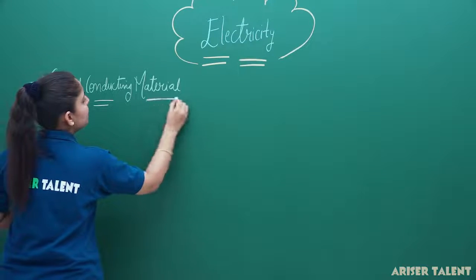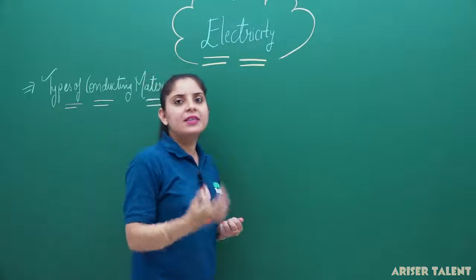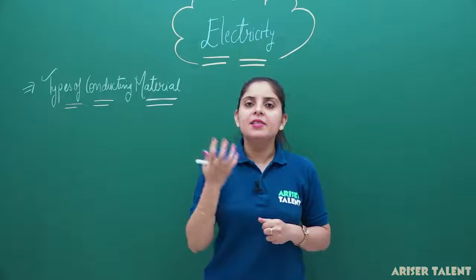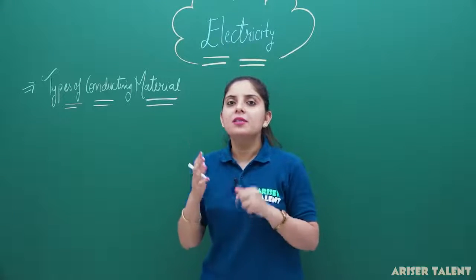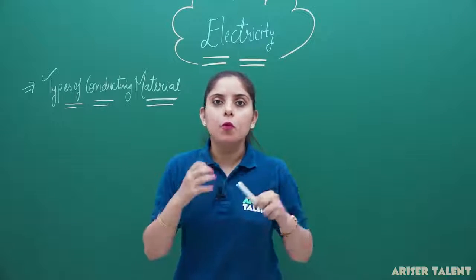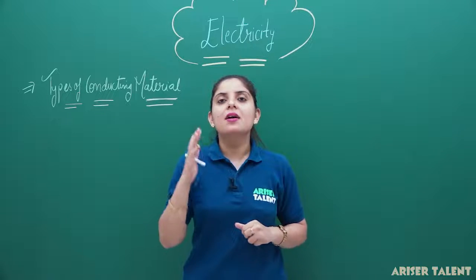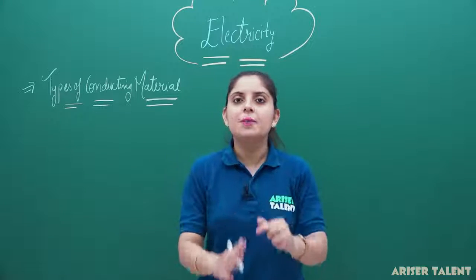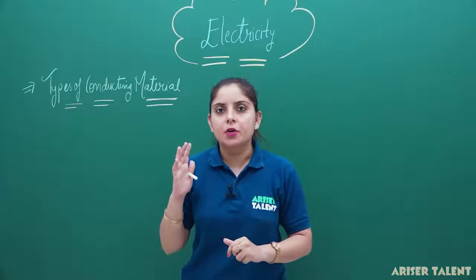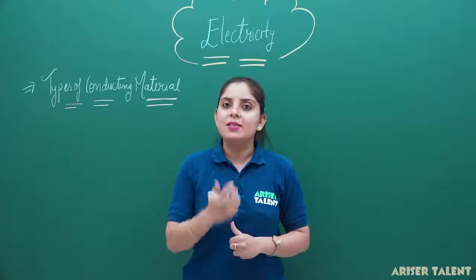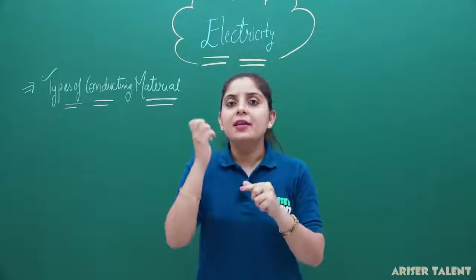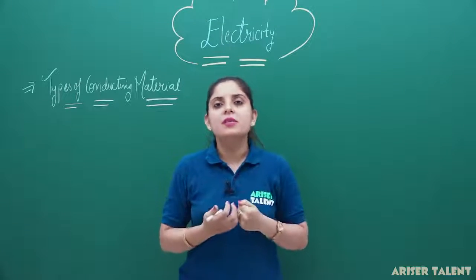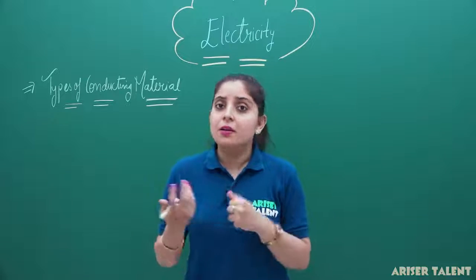This is a very general thing and you have been studying these things from your sixth or seventh class. You have seen in your daily life that some substances have a tendency to allow the flow of current through them. These are called conductors. We have taught that metals are good conductors of electricity because metals have a tendency to pass electric current through them. But what is the reason that some substances allow current to pass while others do not?